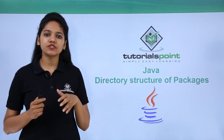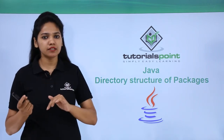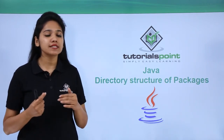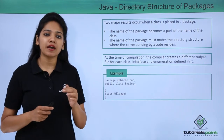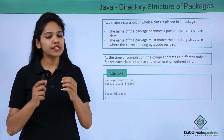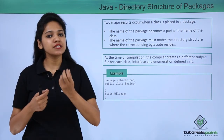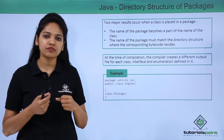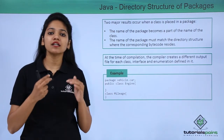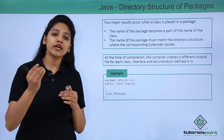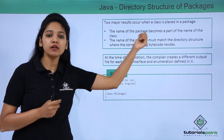By now we know what packages are, how you create a package, how you import a package from one to another, and what classes you would want to access from one package to another. But what happens to the directory structure of the package? Any class you create is stored at some location. A package consists of a group of classes and interfaces — where are these stored, in which directory? What are the Java files and class files, and where are they stored? All these we need to understand.